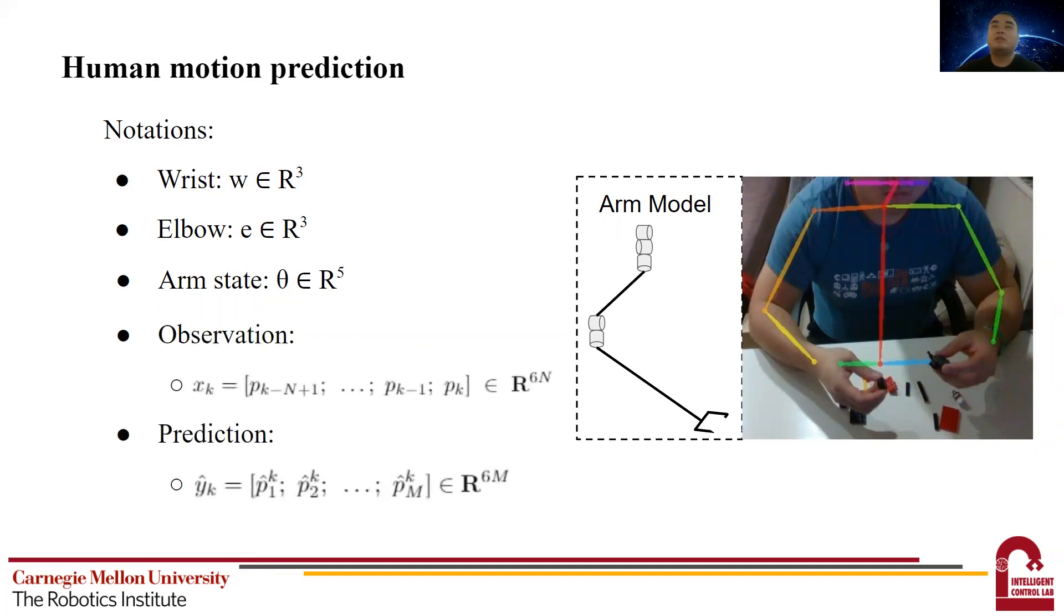We use theta to denote the arm configuration in joint space. Then for the observation, it includes the position for the previous N steps. And the prediction is denoted using the hat symbol, and it includes the prediction for the future M steps. And each one of these position vectors, P, is constructed by stacking the wrist position and elbow position.